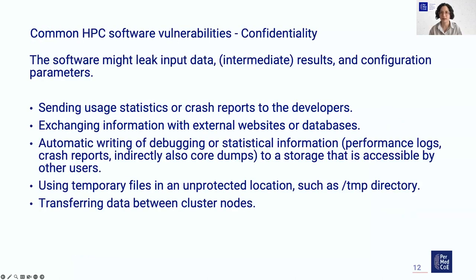Going back to the CIA triad — if we consider confidentiality, the software might leak input data, intermediate results, or configuration parameters. This could happen when software sends user statistics or crash reports to developers, when it exchanges information with external websites or databases, or when it automatically writes debugging or statistical information to storage accessible by other users. The same goes for temporary files in unprotected locations, and also transferring data between cluster nodes.